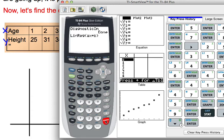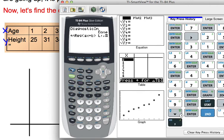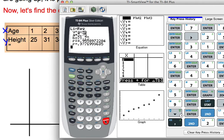Then we want to call up our list. We'll go second, the number 1 enters the first list in, and then comma, second, then the number 2 calls up list 2. Then push enter.